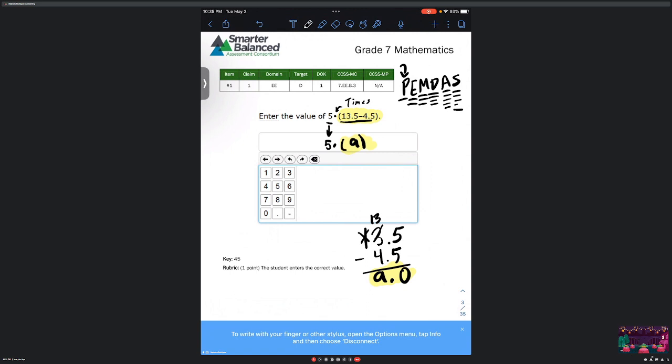So we did our parentheses. Now we have exponents, which we don't have. Next we have multiplication, which we do have: 5 times 9. Let's see, 5 times 9, that's just gonna be 45. And we're done. There's nothing else to do - there's no division, no addition, and no subtraction. So we're just left with the final answer of 45.